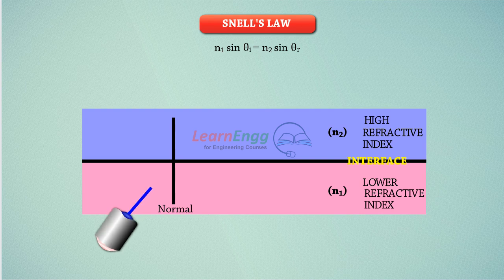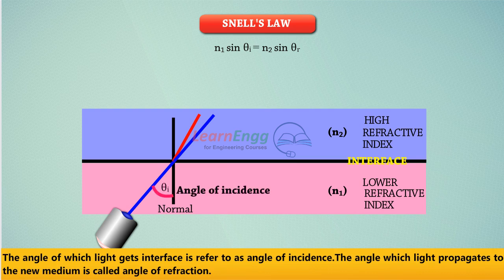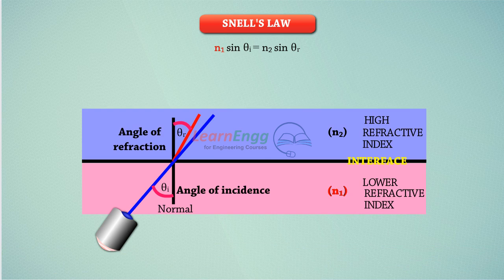However, when light enters at a certain angle, it changes light speed and causes the beam to change direction slightly and propagate to the second medium at a different angle. The angle at which light hits the interface is referred to as the angle of incidence. The angle at which light propagates to the new medium is called the angle of refraction. By placing the known values in the Snell's formula, the degree of refraction can be determined.